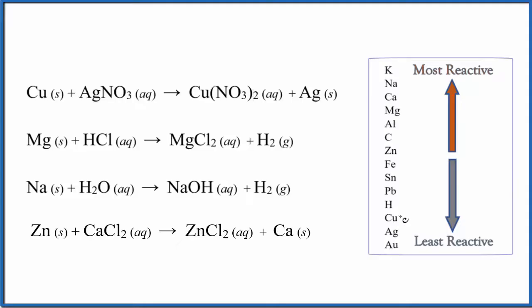For the first one, copper is above silver. So copper can replace the silver here. This reaction takes place. Magnesium and hydrochloric acid. Here's magnesium. Here's hydrogen. Magnesium is higher. So magnesium can push the hydrogen out so it's all by itself. That one takes place.